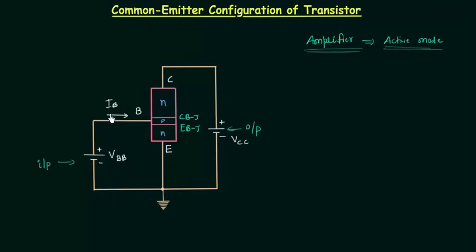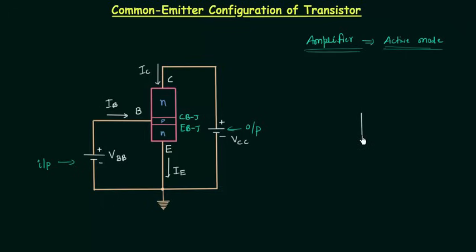We are using an NPN transistor, so the base current IB is the entering current. The emitter current IE is the leaving current, and like the base current, the collector current IC is also the entering current. We can also represent the common emitter configuration using the symbol of the transistor.